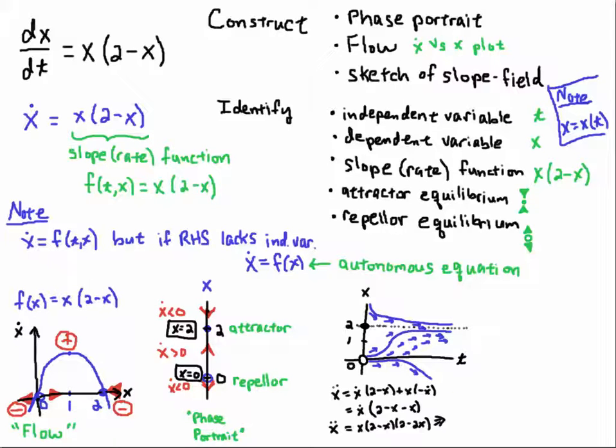You could reason that out. The other thing you could do, is you could just take the second derivative. So, differentiate this again. It takes x double dot. You use the product rule on this term. So, you'll get x double dot is x dot with (2-x) left alone plus x times the derivative of (2-x), which is minus x dot.